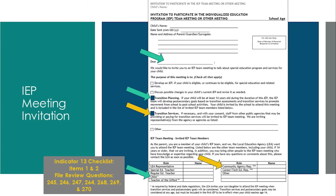For compliance purposes, an agency representative must be listed on the invitation, which is then sent home to parents or family members. This will satisfy the requirement to inform parents of agency involvement during an IEP meeting. However, it is encouraged and highly recommended that you have a conversation with parents about agency involvement prior to the IEP meeting. If an agency will not be invited, you must clearly document why agency involvement is not being pursued at this time, as compliance officers will look for this information.